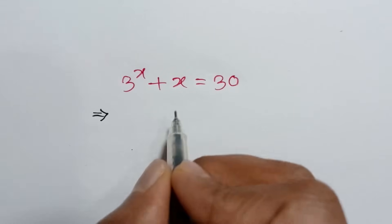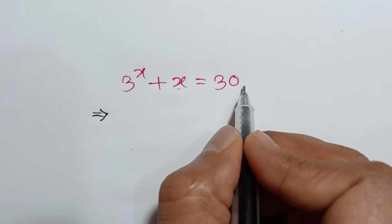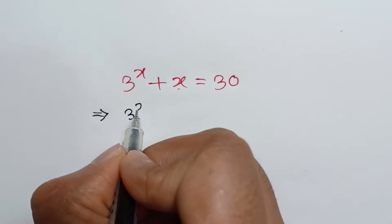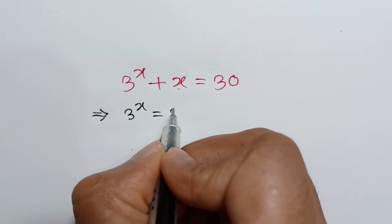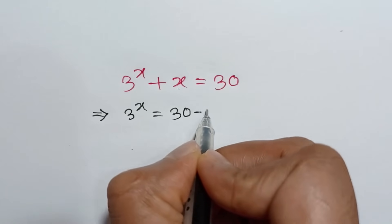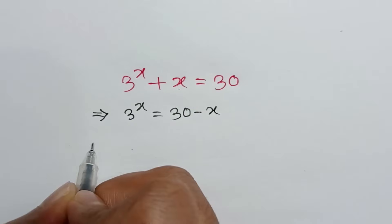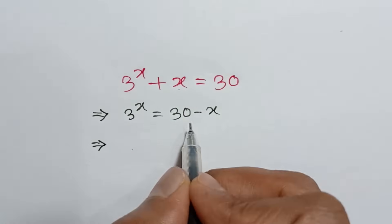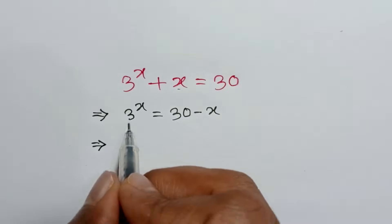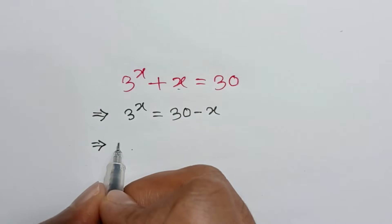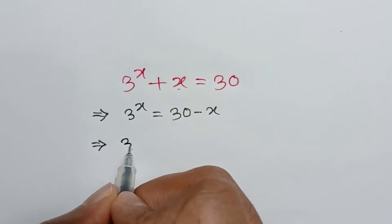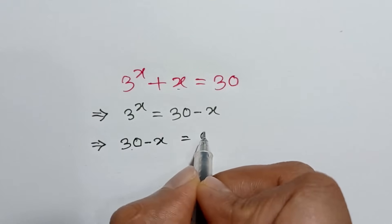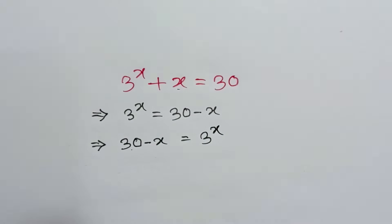Or if we take this to the right side, we will get 3 to the power x is equal to 30 minus x. Or if we exchange sides, right side to left and left side to right, we will get 30 minus x is equal to 3 to the power x.